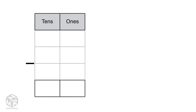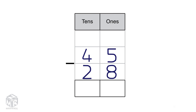Let's try another example: 45 minus 28. Try to solve this problem on your own — pause the video and solve it. We can't subtract 8 from 5, so we regroup one 10 as 10 1s. Now we have 15 1s. We cross out the 5 and put 15 on top.